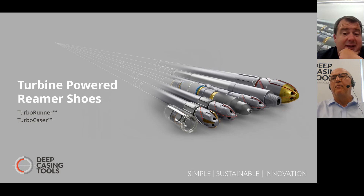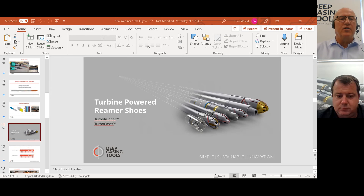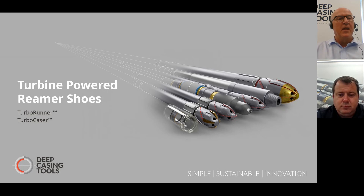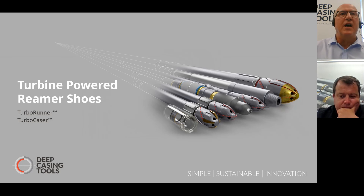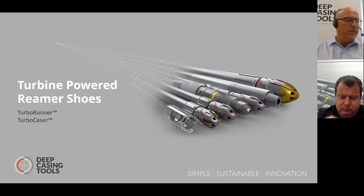Dave is going to run through how our turbine-powered reamer shoes mitigate against risk in ERD wells. Our Turbo Runners are non-drillable turbine-powered reaming shoes, and the Turbo Caser is the drillable version. The Turbo Caser and Turbo Runner were developed and first run in 2011, so we've been running these tools for about 11 years. We've sold over 600 tools and have 254 runs with our Turbo Runner.